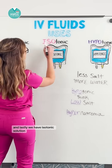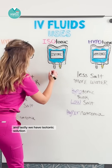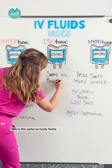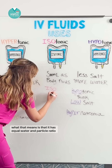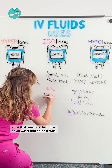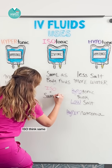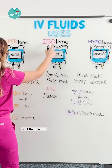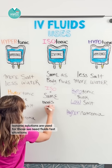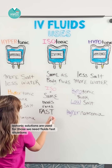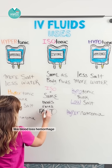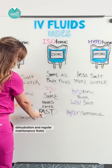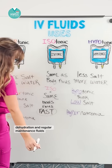And lastly, we have isotonic solution. This is the same as body fluids, meaning it has an equal water and particle ratio — iso means same. Isotonic solutions are used in situations where we need fluids fast, such as blood loss, hemorrhage, dehydration, and regular maintenance fluids.